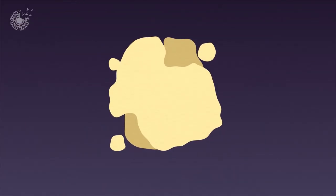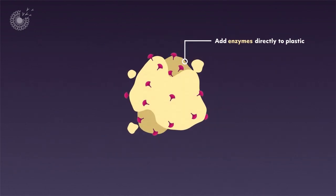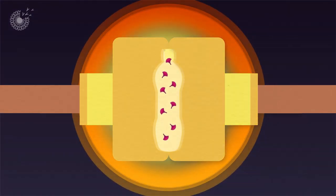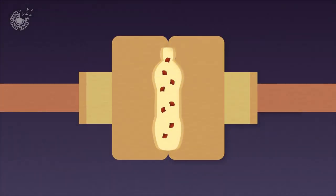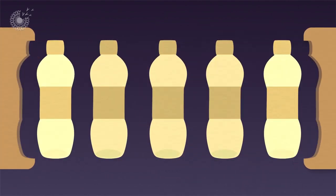To help things along, humans could add enzymes directly to plastic so they're ready to help break it down when the time comes. But the high heat and pressures of the manufacturing process can damage the sensitive enzymes before they're able to do their work.